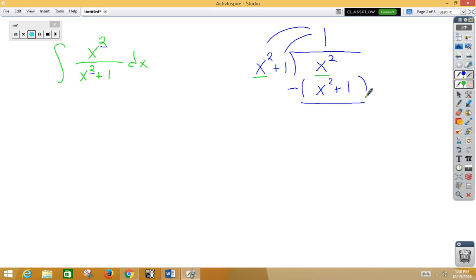Subtract. Distribute our negative. We get a remainder of negative 1. So that would be this time minus 1 over x squared plus 1. We can now rewrite this integral as two separate integrals, the integral of 1 dx minus the integral of 1 over x squared plus 1 dx.